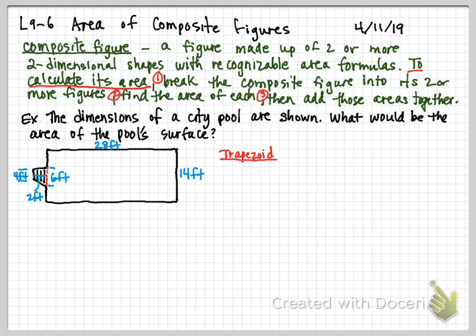What I see on the right is a rectangle. So I'll figure out the formula for each, substitute in the numbers, and calculate. Starting with the trapezoid: base one is 4 feet at the top of the stairs, base two is 6 feet at the foot of the stairs inside the pool, and the height is 2 feet.